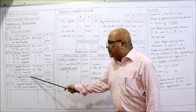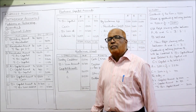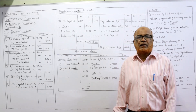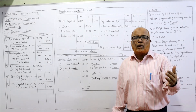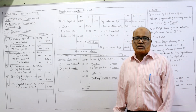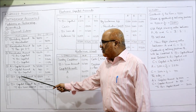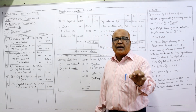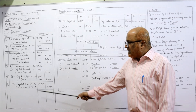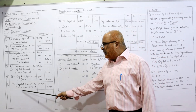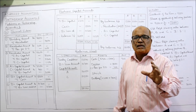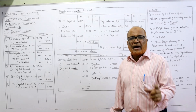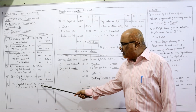Now B's capital account debit to cash. In the problem it is given that 5,000 rupees will be paid immediately to the retiring partner. So entry: B's capital account debit, to cash 5,000, being the amount paid to the retiring partner. Last entry: B's capital account debit, to B's loan account — whatever balance remains in B's capital account will be transferred to the loan account. We got 10,200 by making the capital account.